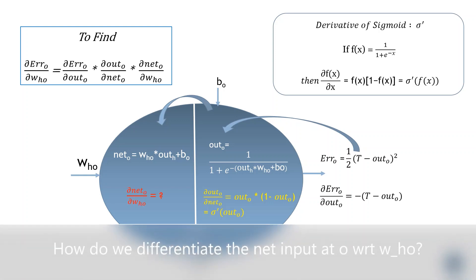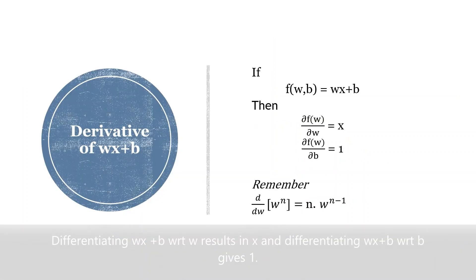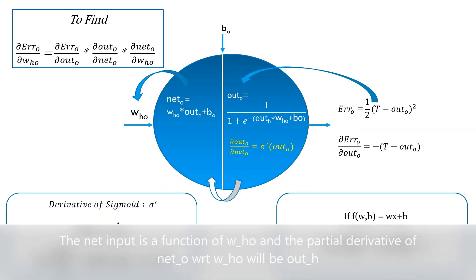Replacing f(x) with outO, we get the derivative as outO * (1 - outO), also written as sigma dash of outO. Now, how do we differentiate the net input at O with respect to WHO? Differentiating wx + b with respect to w results in x, and differentiating wx + b with respect to b gives 1. The net input is a function of WHO, and the partial derivative of netO with respect to WHO will be outH.